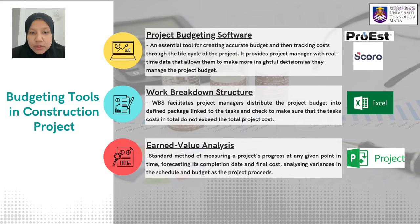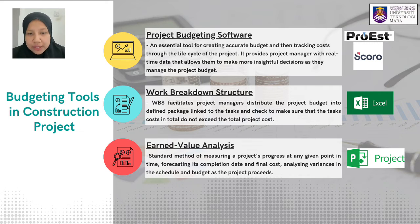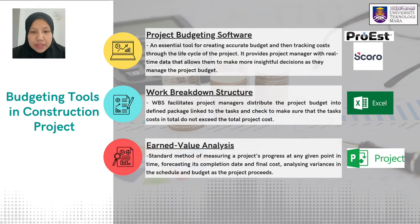The second tool is the Work Breakdown Structure (WBS). Project managers can use WBS tools to distribute the project budget into defined packages linked to tasks and check that task costs in total do not exceed the total project cost. The third tool is earned value analysis, a standard method of measuring a project's progress at any given point in time, forecasting its completion date and final cost, and analyzing variances in schedule and budget as the project proceeds.